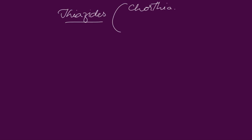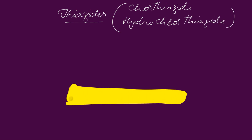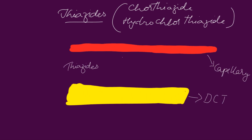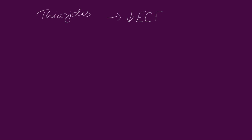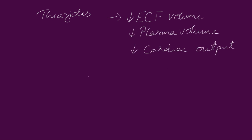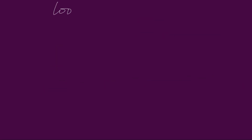Now let us look at the drugs. First, the thiazides. The thiazides have their action on the distal convoluted tubule of the nephron. They promote the flow of sodium, chloride and water from the capillaries into the distal convoluted tubule, from where the ions and water are drained into the urine. As the ions and water are absorbed from the blood, the blood becomes thin and its volume decreases, thereby decreasing blood pressure. It may also decrease extracellular fluid volume, plasma volume and cardiac output, and may reduce blood pressure by direct arterial dilation.